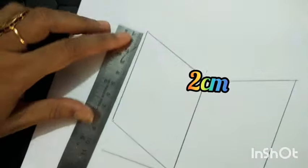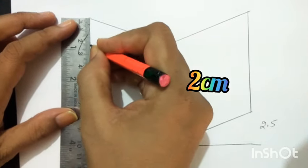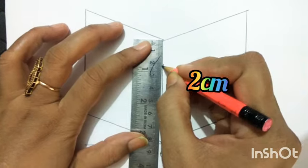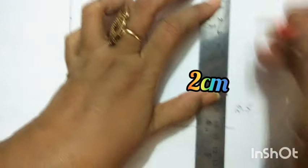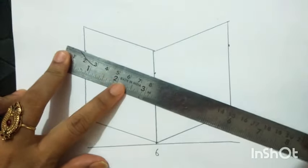Take a 2 centimeter point on each line for the lid of the chalk box. Again, join these three points.